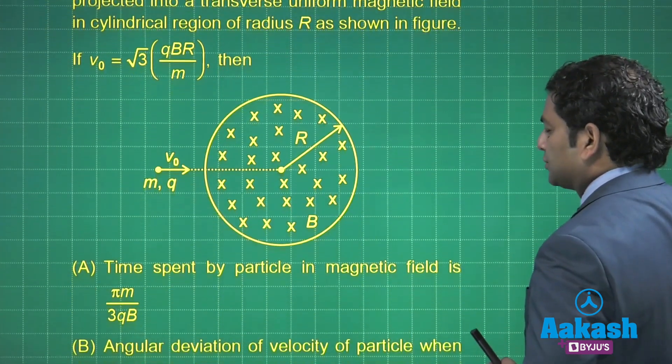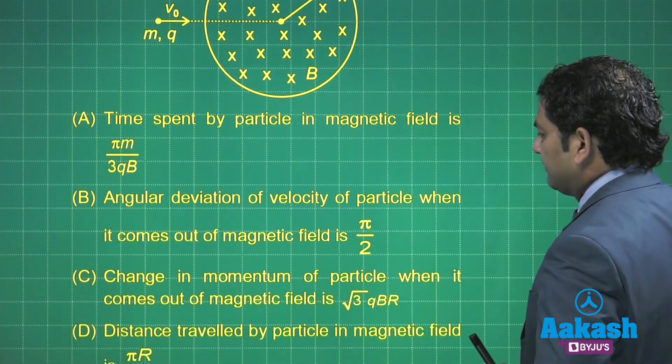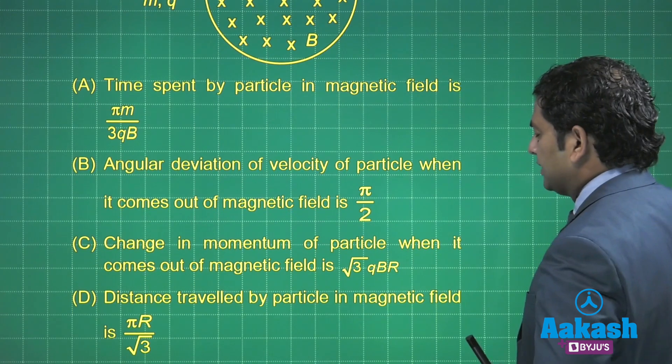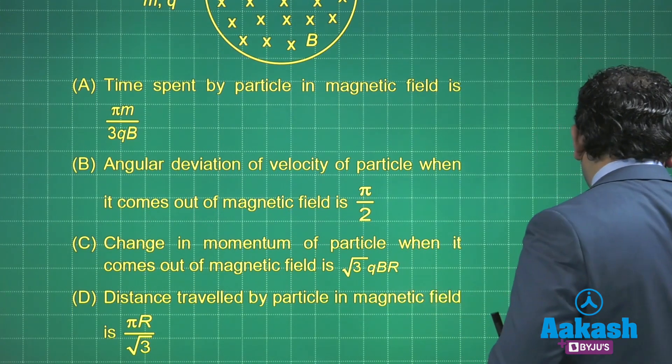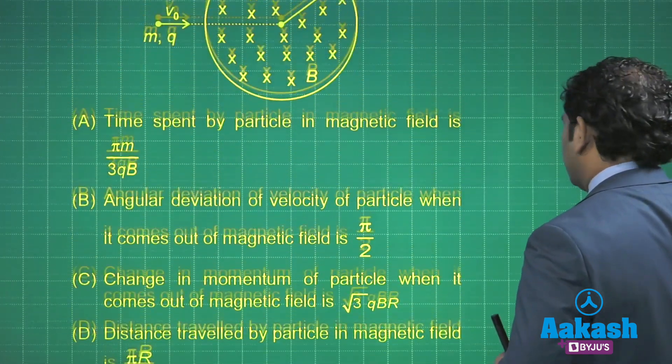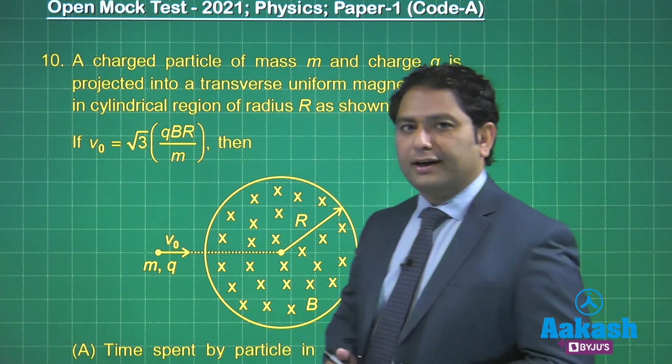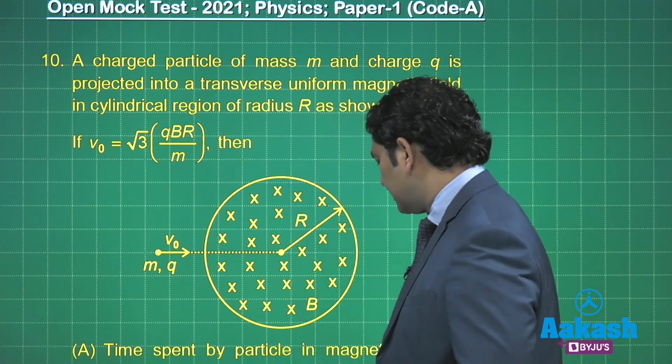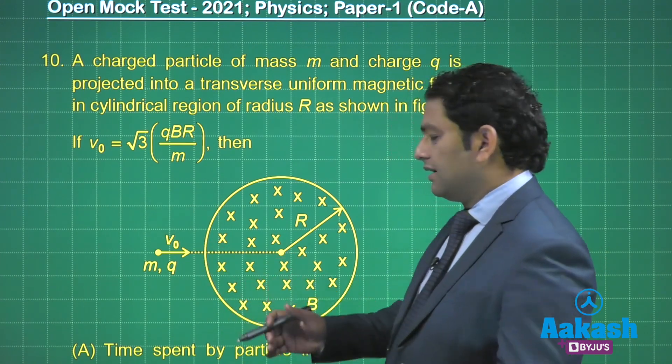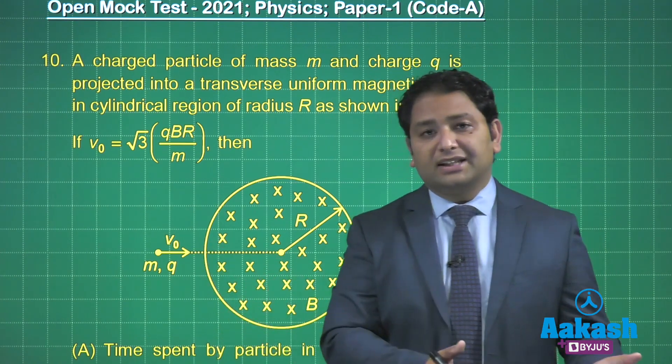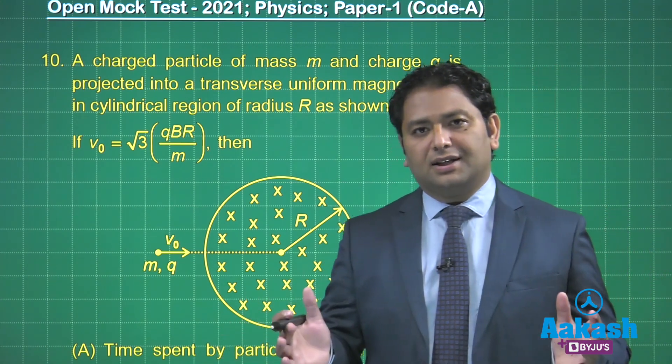Now what are the options? Let us have a glance. We need to calculate the time span, the angular deviation, the change in momentum, and the distance traveled. Now everything is going to happen once we see the trajectory. To go with the trajectory I need to go first with the radius. Because anyway it is very clear that velocity is perpendicular to magnetic field, so the path will be circle. In our case it will be a part of a circle.